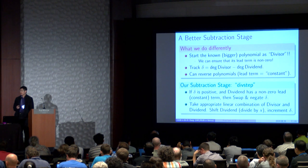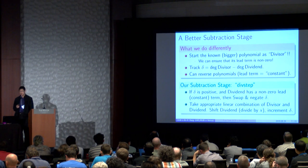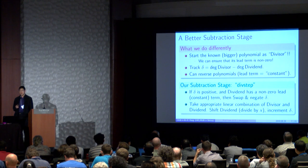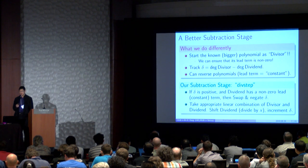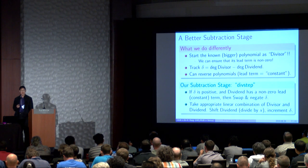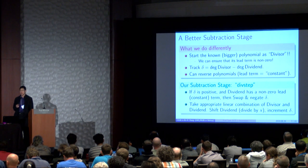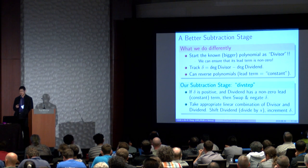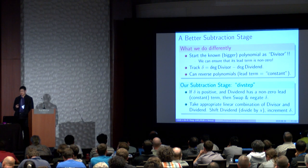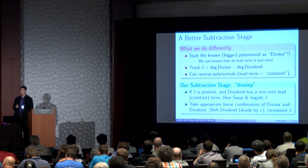Now, here's a better way to do the subtraction stage. We can start with the known bigger polynomial as the divisor. The reason to do that is we can ensure that its leading term is non-zero. We track only one number, which is the degree difference, the degree of divisor minus the degree of the dividend.